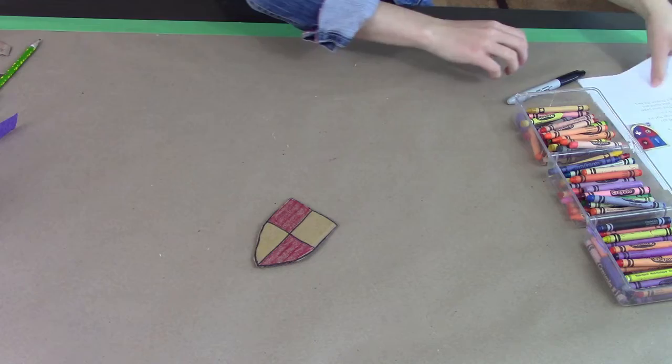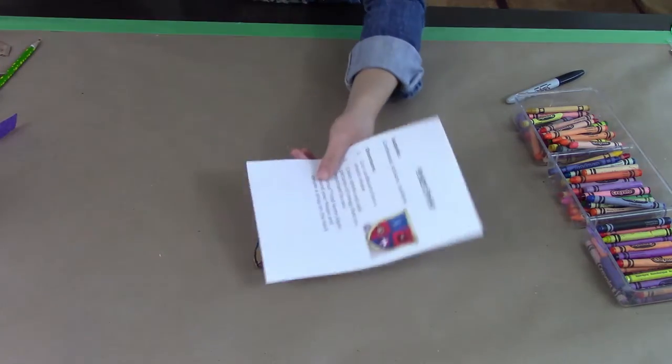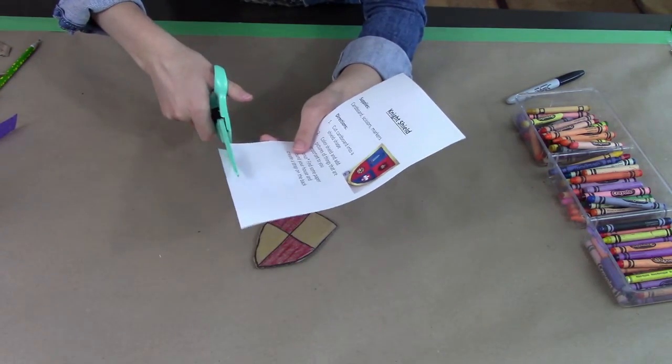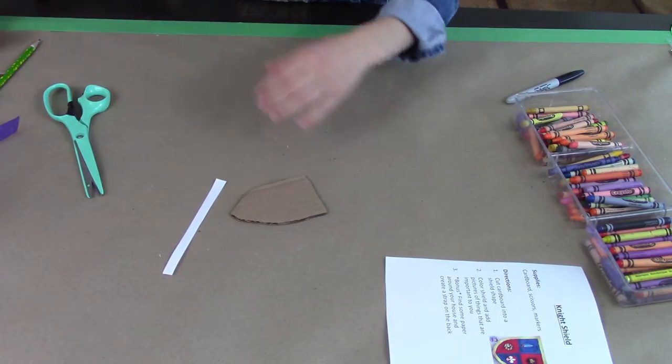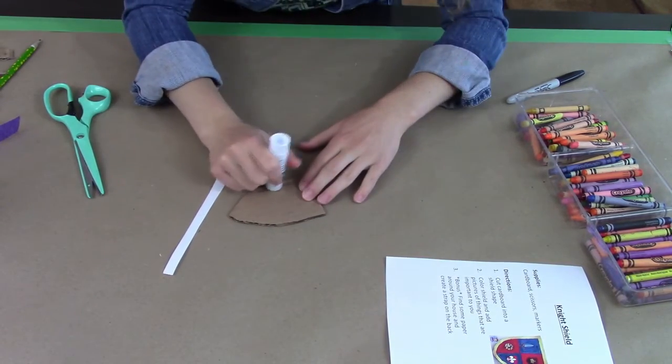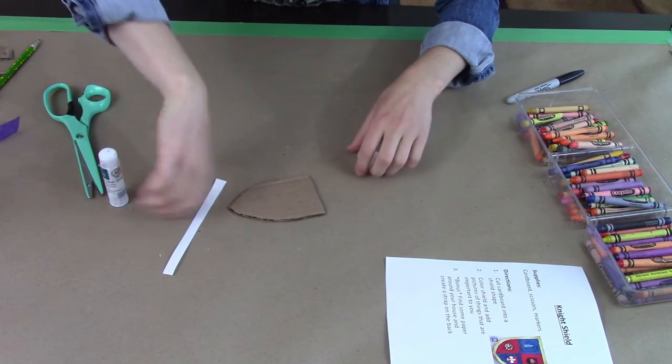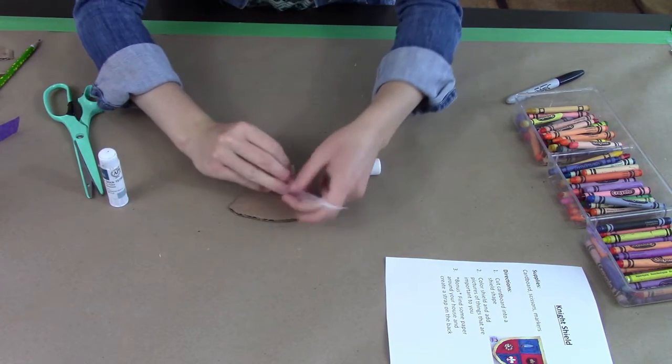Once you are happy with it decorated if you want you can add a strap on the back of it. I'm just going to use a strip of white paper from the bottom of the instruction sheet for this. So I just cut a thin strip. I'll add glue to one end and stick this strip on.